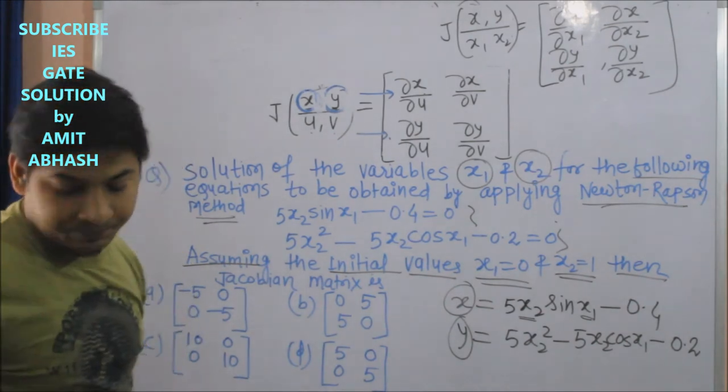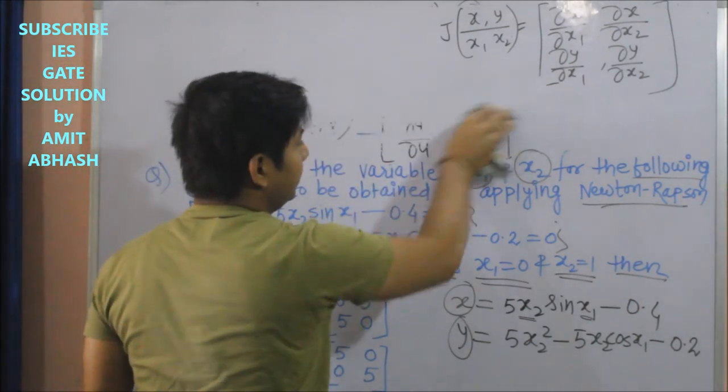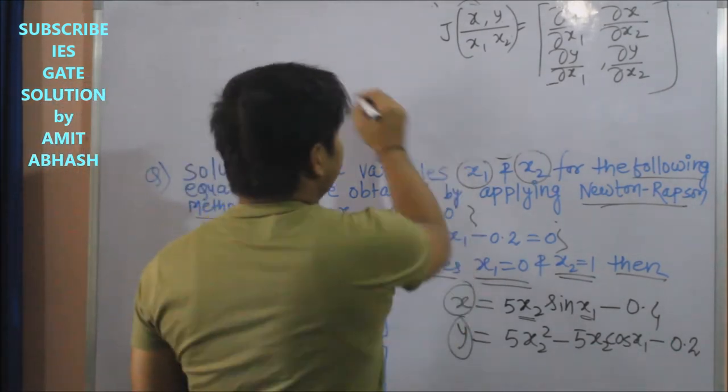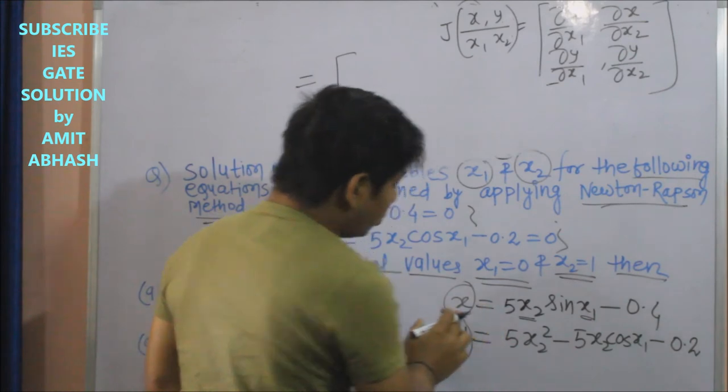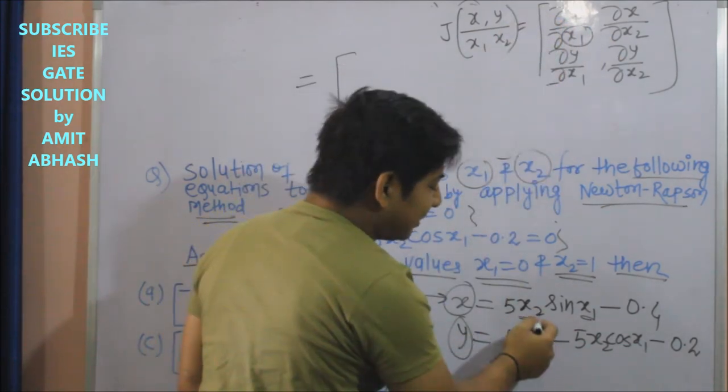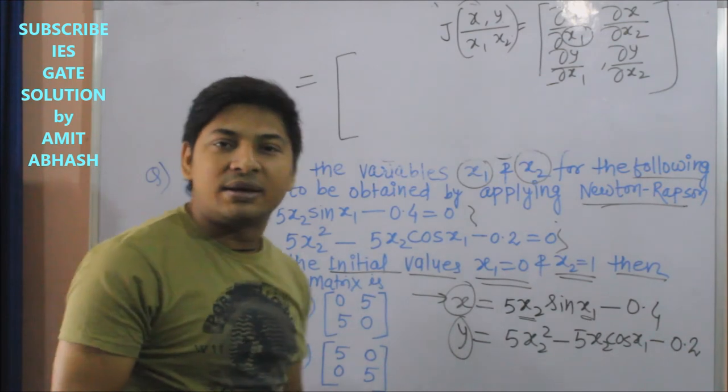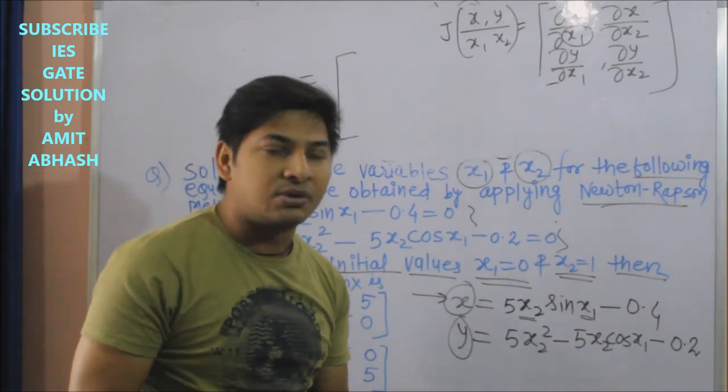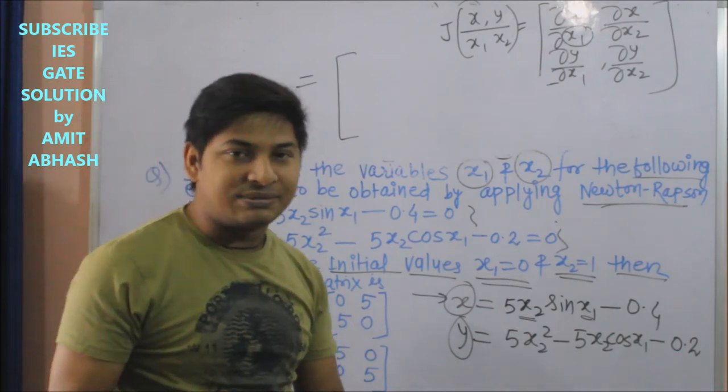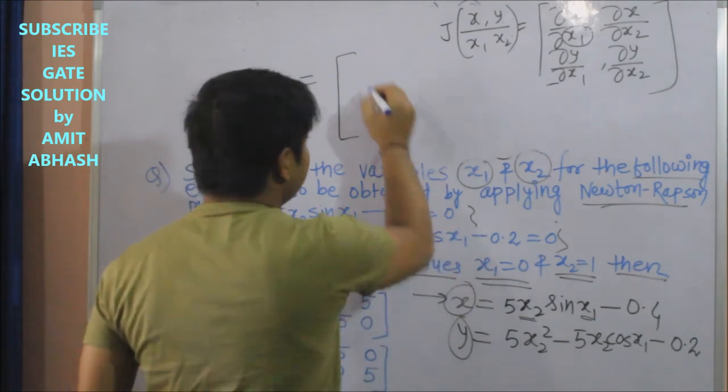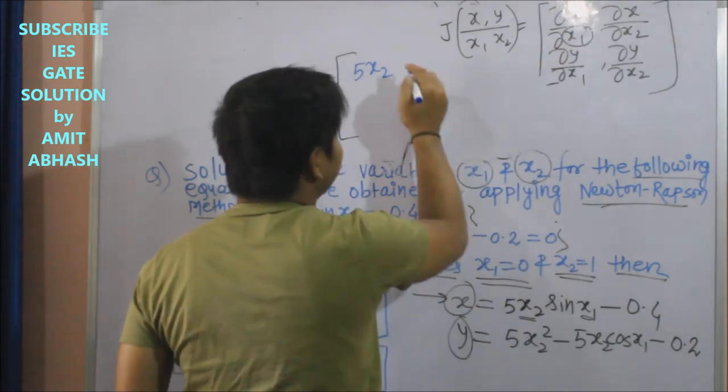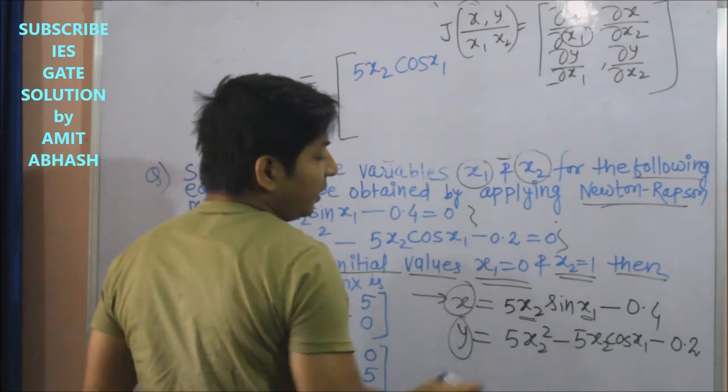For this x, we have to partially differentiate it with respect to x1. x1 ke aspect meh differentiate karna hai, so x2 will behave like a constant. In partial differentiation, with respect to which you are differentiating, only that should be considered, otherwise it remains constant. So here what will happen: this is 5x2, and sin x1 ka differentiation x1 ke respect meh is cos x1. And this becomes zero.